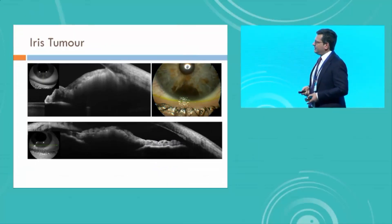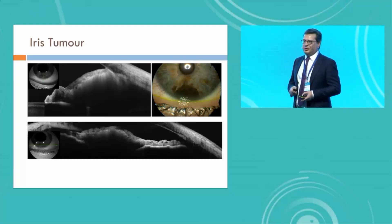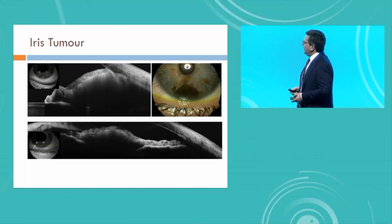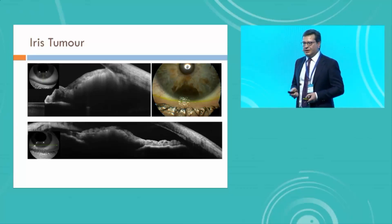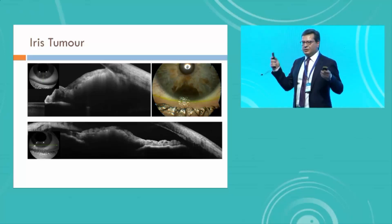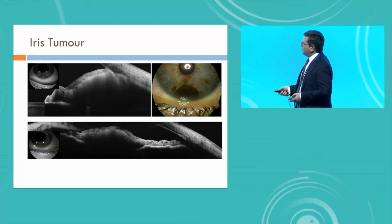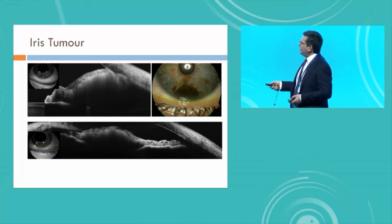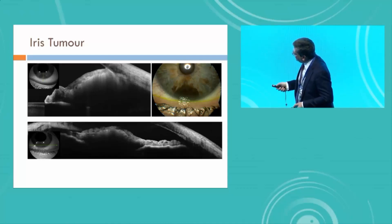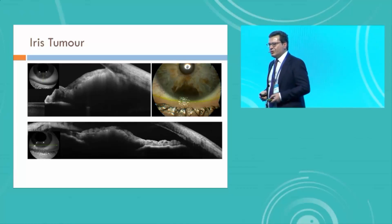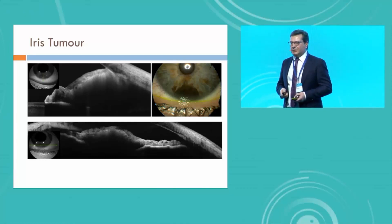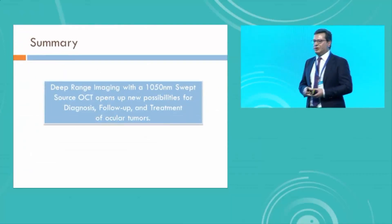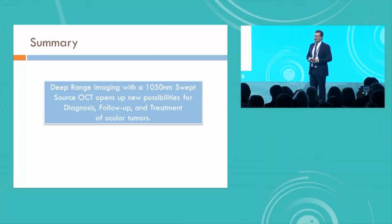My last case is not the choroid but the uvea — the anterior segment. I wanted to show this case because there is no presentation on anterior segment tumors at this congress. With the swept source OCT and the anterior segment adapter, you are able to image the anterior segment perfectly — using OCT not only for measurements but to determine if this is the tip of the iceberg or if it's just a tumor confined to the anterior segment. In many cases, you are also able to get that information. In summary, with the swept source OCT you are able to do a lot of things in ocular tumors, and we are all happy to have that. Thank you very much.